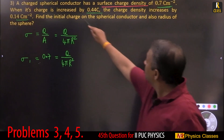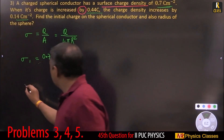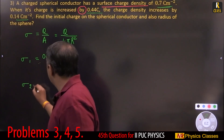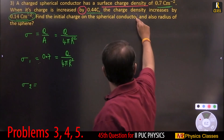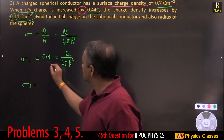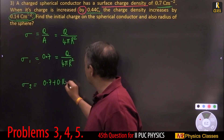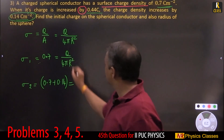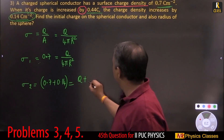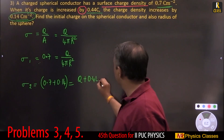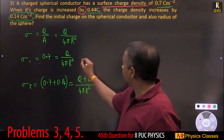Now the charge is increased by 0.44 C. Adding gives sigma 2 equal to 0.84, meaning 0.7 plus 0.14 equals 0.84. This gives equation 2: 0.84 equals Q plus 0.44 divided by 4 pi r squared.